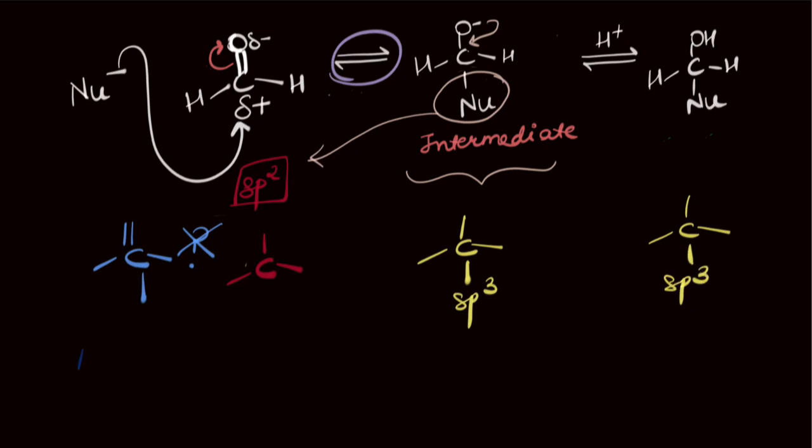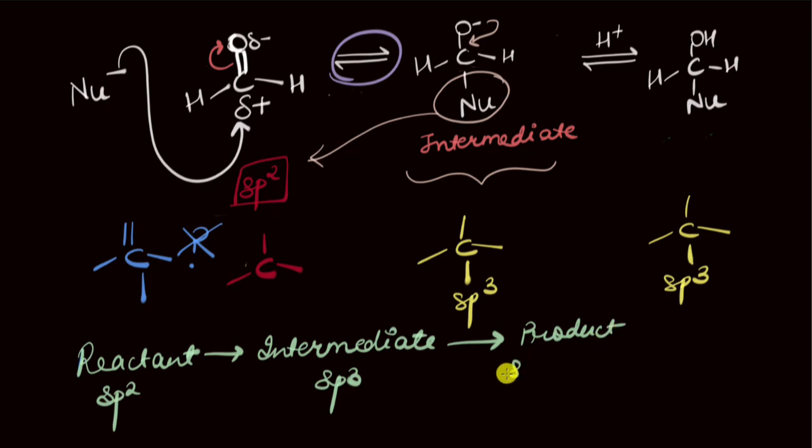So, if somebody asks me what is the hybridization shift really, I would tell them that if you go from reactant to intermediate, there is a change in hybridization from sp2 to sp3. But when the intermediate finally gives the final product, the hybridization does not really change. And if we talk about reactant to product, there is a hybridization shift from sp2 to sp3.